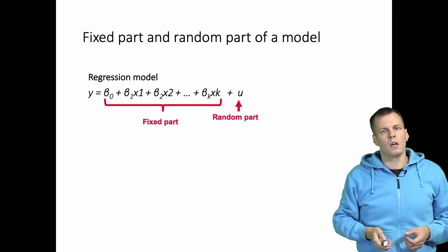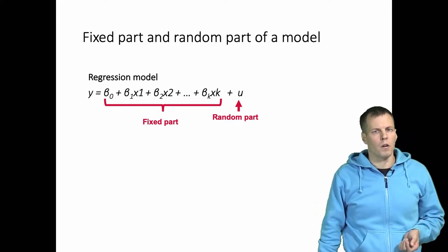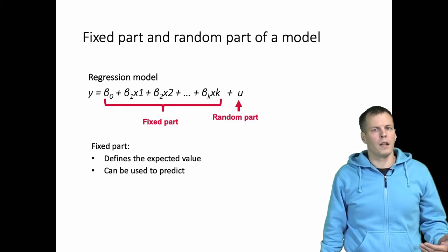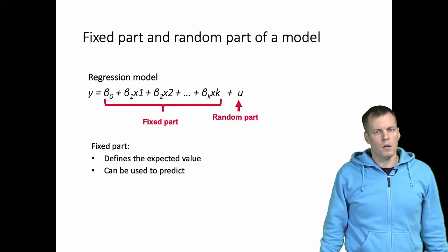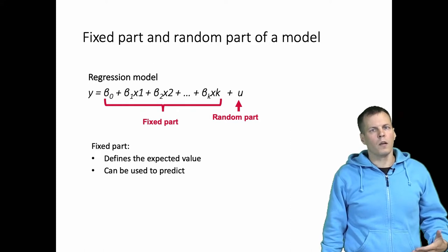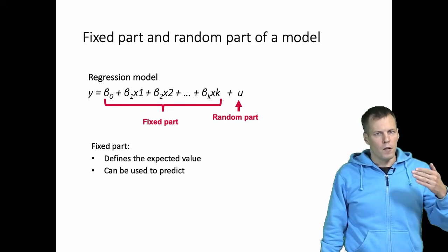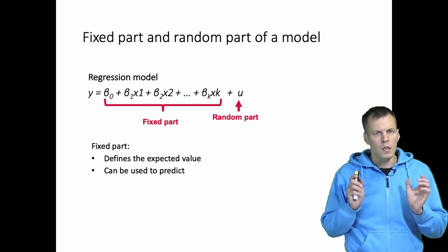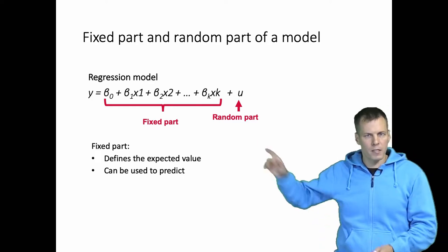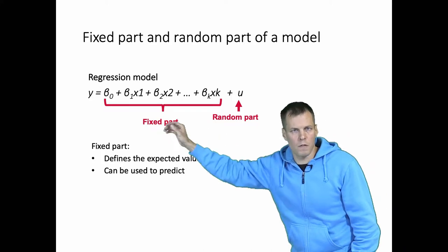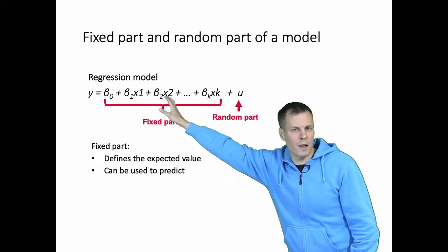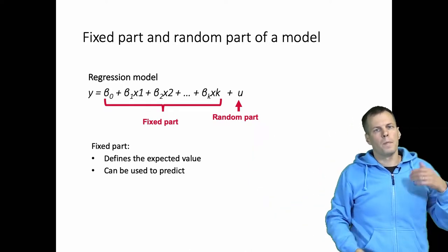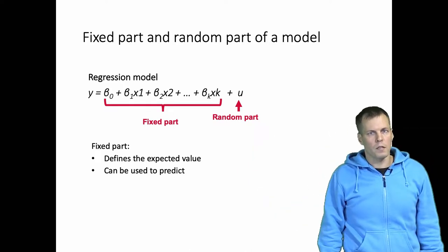Let's take a look at what the fixed part and random part are. The fixed part gives us the expected value and can be used to predict. Using the fixed part, we can calculate a specific value for each observation. The key here is that in the fixed part we have specific values for the regression coefficients and for the x's, and we can calculate a specific predicted value for each of our observations.